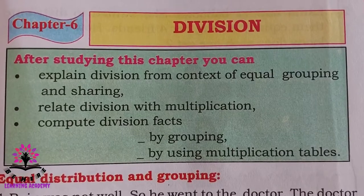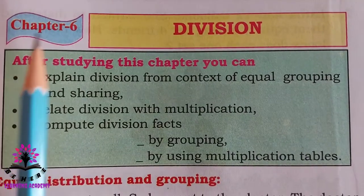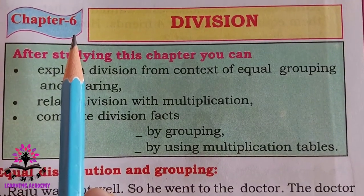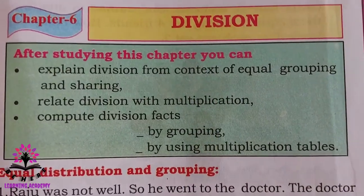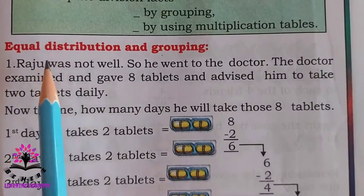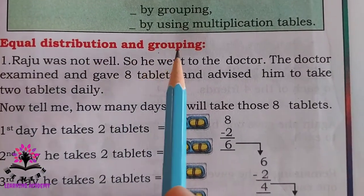Hello students, today we are going to study the new chapter from your part two textbook, chapter number six: Division. Equal distribution and grouping.